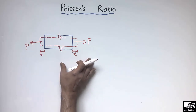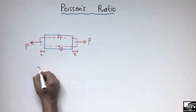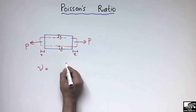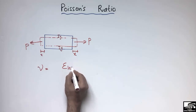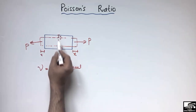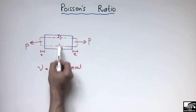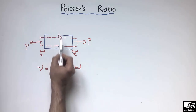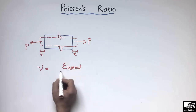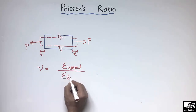This phenomenon is called the Poisson effect. The Poisson ratio is simply represented by mu, and it is the ratio of the strain in the lateral direction — which is being compressed, squeezed in the y direction — divided by the strain in the longitudinal direction.